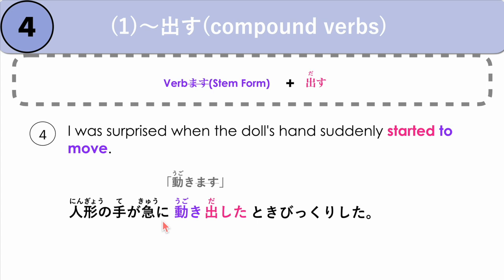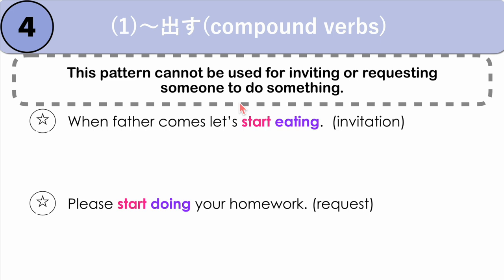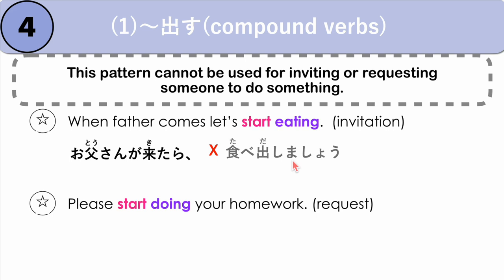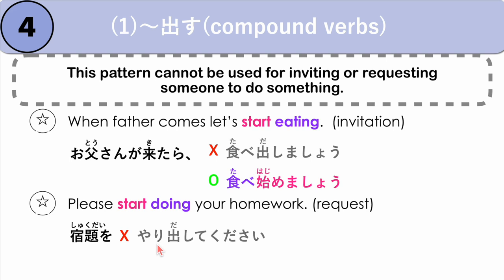This pattern cannot be used for inviting or requesting someone to do something. For example, in this sentence: when father comes, let's start eating — this is an invitation. We cannot say otoosan ga kitara, tabe dashimashou. The grammar point nani nani shiyou is for invitations — let's do something. We cannot use dasu here. Instead, we can say tabe hajimemashou — hajimeru, which we will learn next. Another example: please start doing your homework. We cannot say shukudai wo yari dashite kudasai. Instead, we use yari hajimete kudasai. Shukudai wo yari hajimete kudasai.